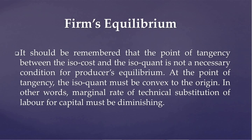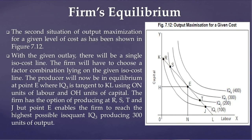At the point of tangency, the isoquant must be convex to the origin. In other words, the marginal rate of technical substitution of labor for capital must be diminishing. Now let us discuss a different situation: output maximization for a given level of cost, shown with the help of figure 7.12. With a given outlay, there will be a single isocost line and the firm will have to choose a factor combination lying on it. The producer will be in equilibrium at point E where IQ2 is tangent to KL, using ON units of labor and OH units of capital. The firm has the option of producing at R, T, and J, but point E enables the firm to reach the highest possible isoquant IQ3, producing 300 units of output.